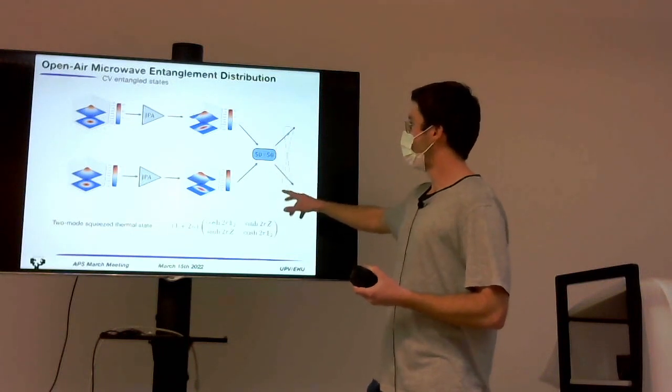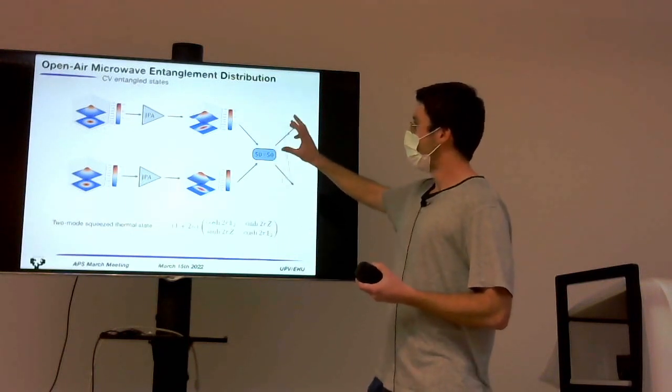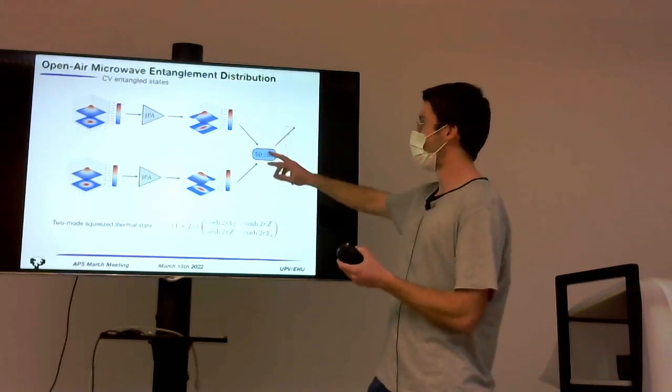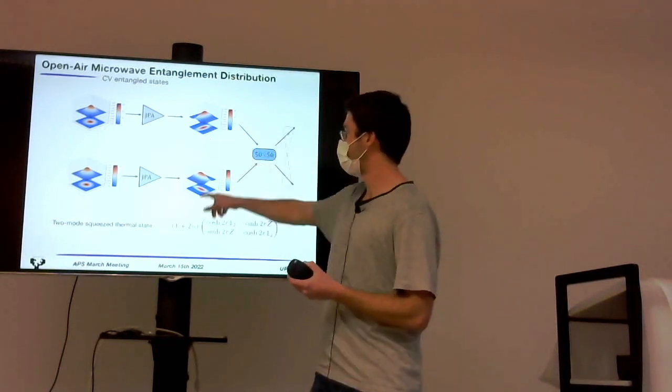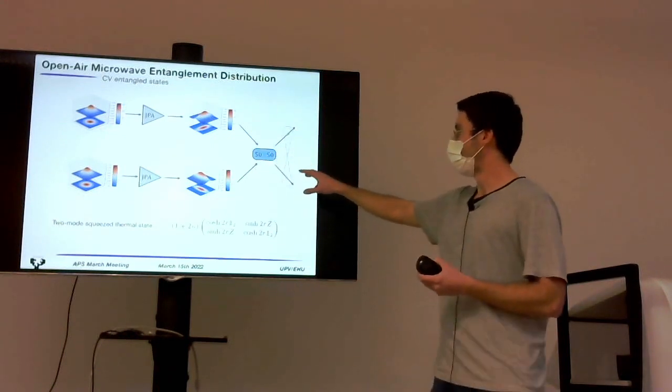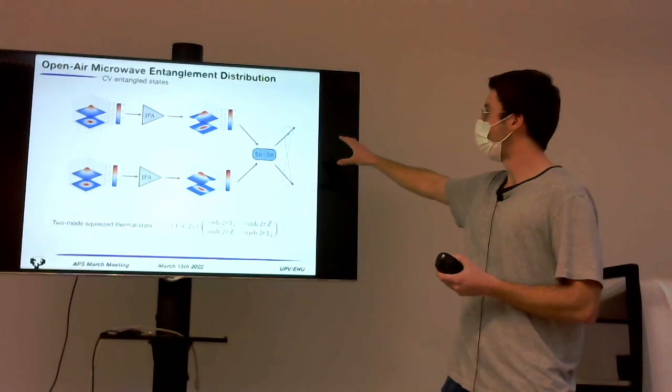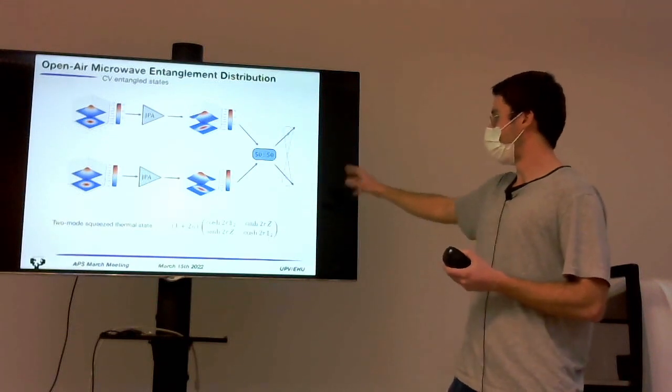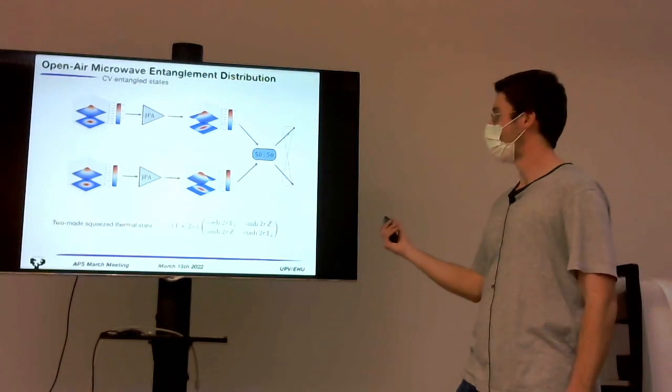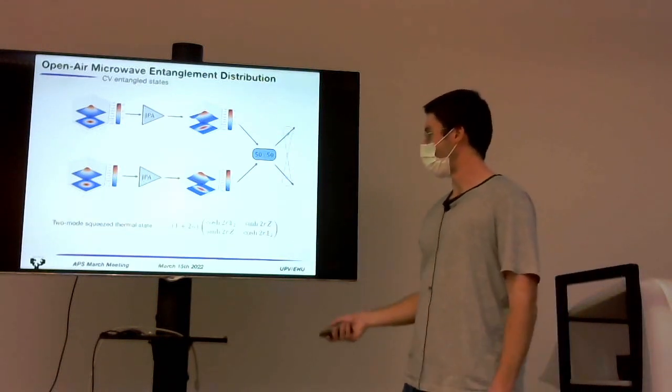So, these states are generated from two states that are single-mode squeeze states, with squeezing in opposite directions of phase space, this one in X, this one in P. And they're combined in a balanced beam splitter. So, the outcome states are two-mode squeeze states, which are entangled states. Since the whole process is Gaussian preserving, we will describe them through the covariance matrix.